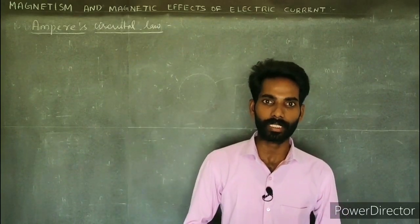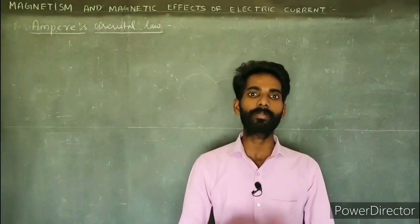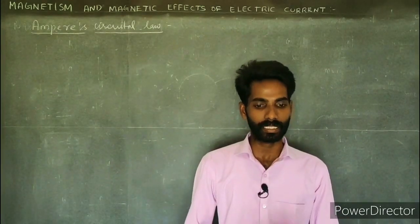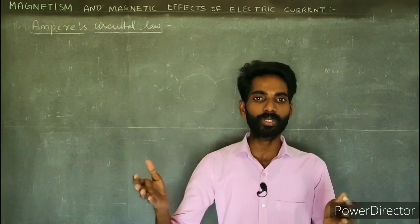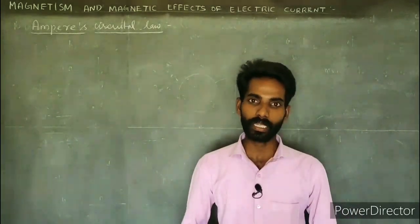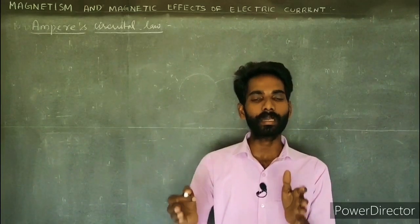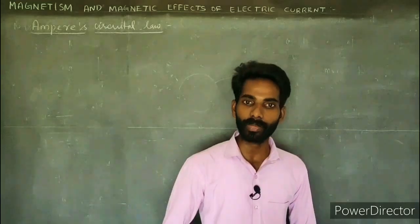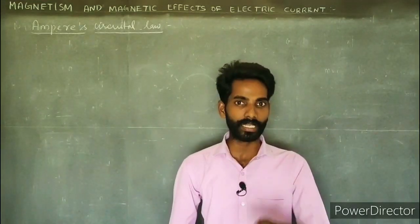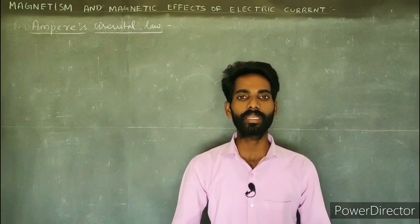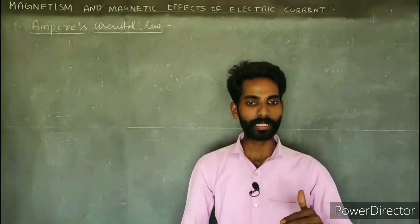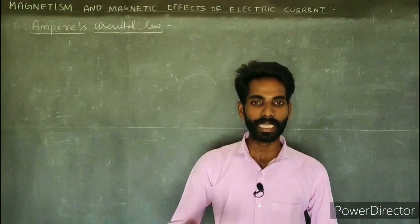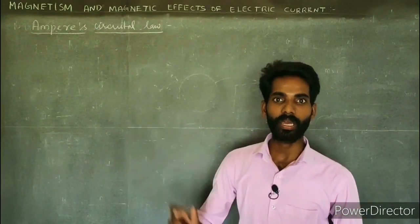You can use the Biot-Savart law to calculate the magnetic field, but if you apply it, it is difficult — you will see many mathematical steps and complicated equations. However, using the Ampere circuit, we can calculate the current in a conductor at any case, independent of the shape of the conductor.